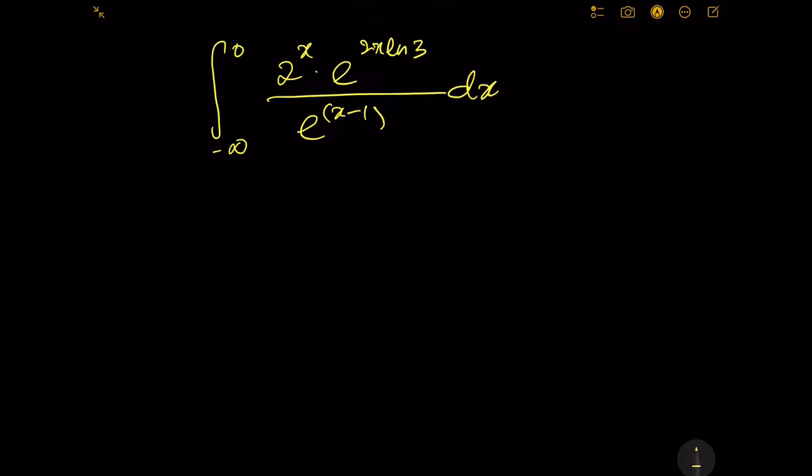First, we need to know that 2 is actually equal to e to the power of ln 2, because the exponential and log will cancel each other. So therefore, 2^x is actually e^(x ln 2).